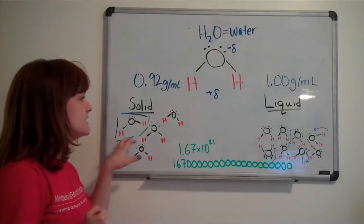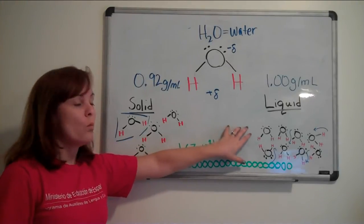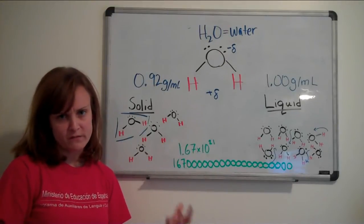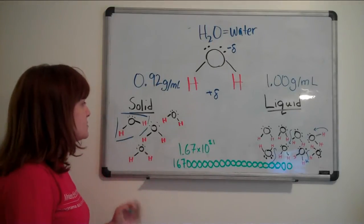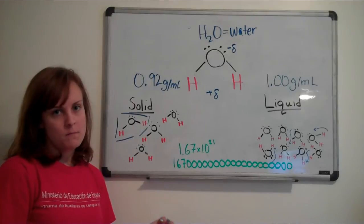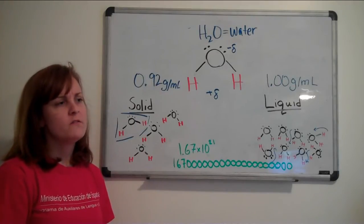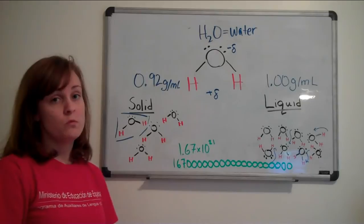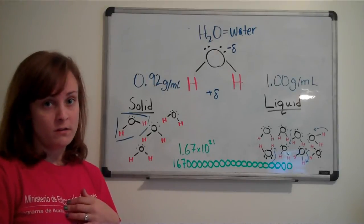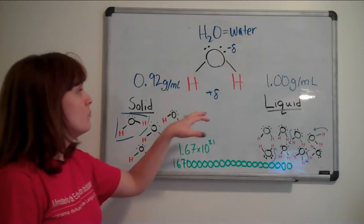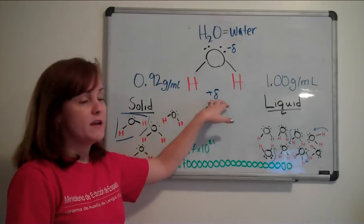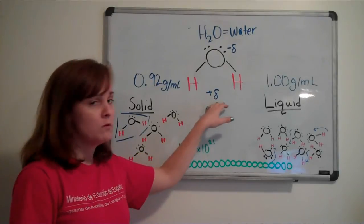The density of ice versus the density of water explains why ice cubes float. This is actually a special quality that not a lot of other molecules have, and it's important to our life on Earth. If water didn't have this property of polarity and hydrogen bonding, we wouldn't be alive.